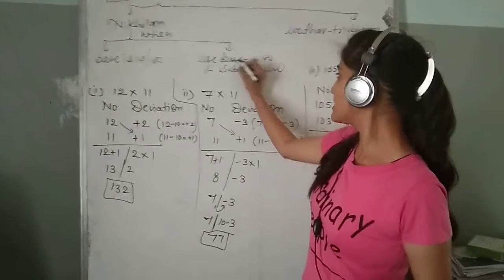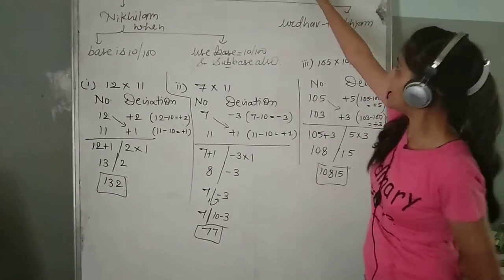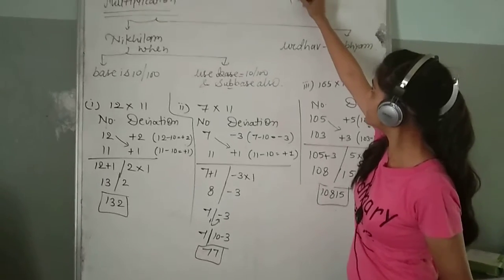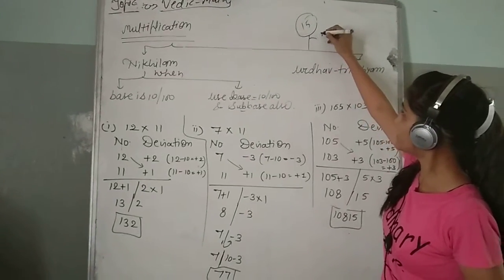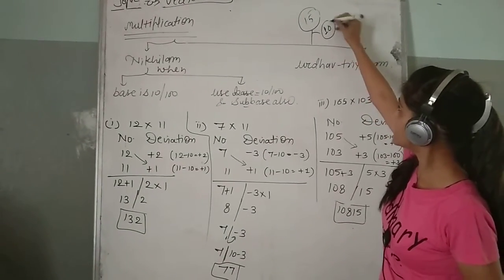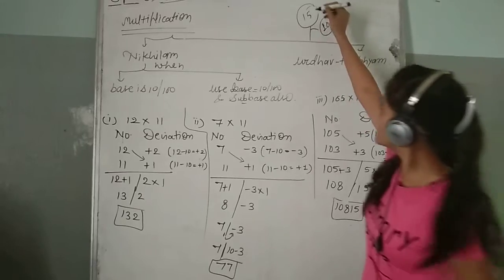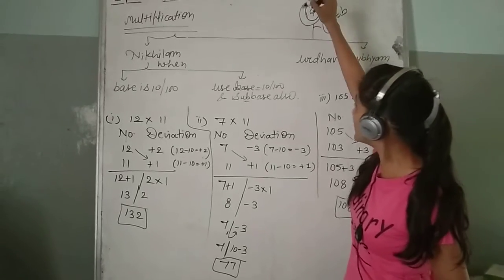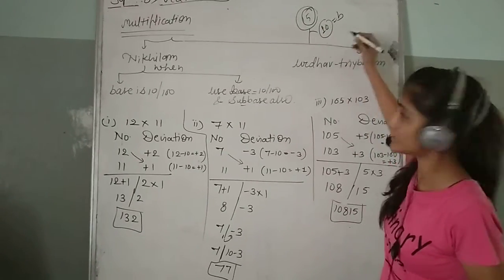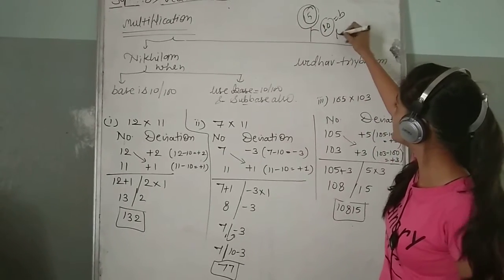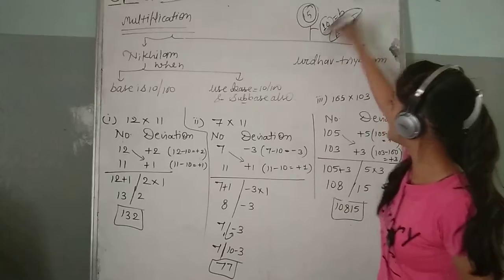Sub-bases are numbers like 15. For 15, the nearest base is 10. So the base is 10. In sub-base, the number 15 is how many more than 10 — that is 5. So the sub-base we take is 5.